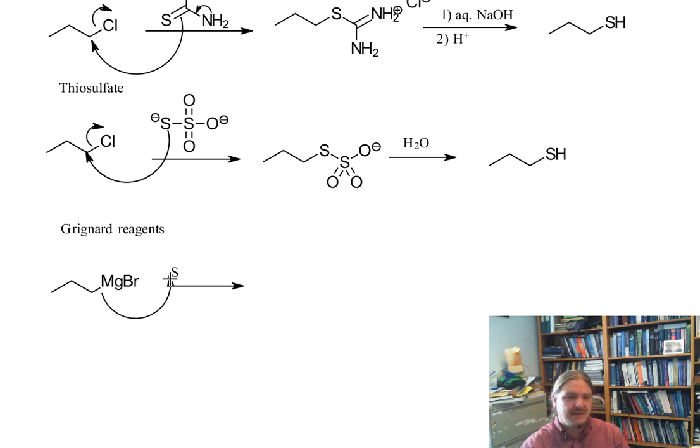I'm going to just be a little bit lazy and represent it as S. Kind of makes the mechanism a little bit neater. It's really just as simple as nucleophilic attack on the sulfur and then that forms the corresponding thiolate anion.